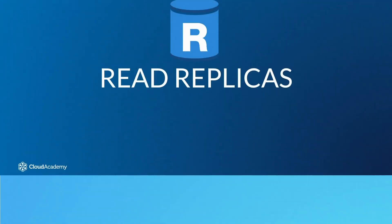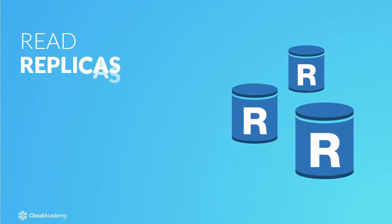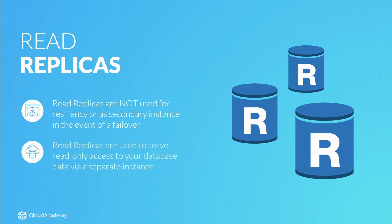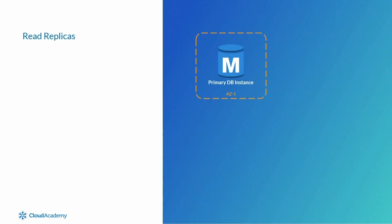We now know that multi-AZ provides fast recovery of read-write services when your primary RDS instance fails. Read replicas are not used for resiliency or as a secondary instance in the event of a failover. Instead, they can be used by your application and other services to serve read-only access to your database data via a separate instance — a read replica.